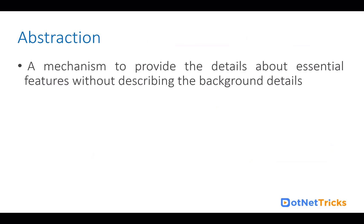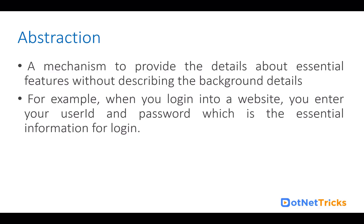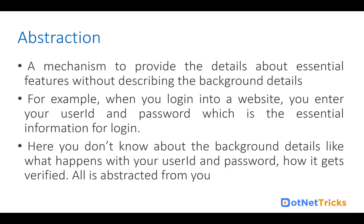Let's start with abstraction. Abstraction is a mechanism to provide the details about the essential features without describing the background details. It means you don't need to tell about all the details of what is happening in the background — you just tell about the essential features. For example, when you login into a website, you enter your user ID and password, which is the essential information for login. But here you don't know about the background details, like what is happening with your user ID and password and how it gets verified. All of that is abstracted from you.